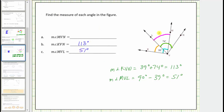To check our work, notice that 51 degrees plus 39 degrees equals 90 degrees, and these two angles together form the right angle KVM. Now, the measure of angle LVM plus the measure of angle MVN must equal the measure of angle LVN, which is 74 degrees. Therefore, the measure of angle MVN equals 74 degrees minus 51 degrees, which equals 23 degrees.